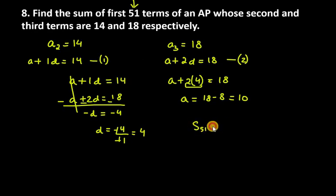So S51 equals 51 over 2, in bracket 2 times A plus N minus 1 times D. A is 10, N minus 1 means 51 minus 1, and D is 4.